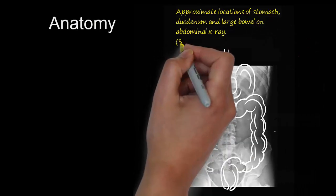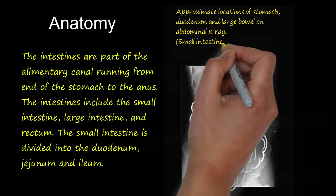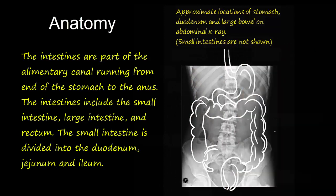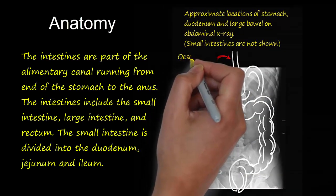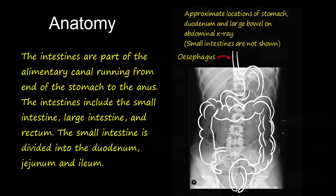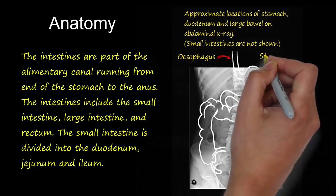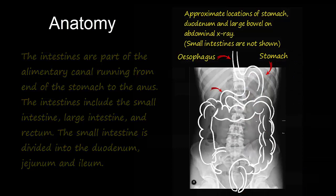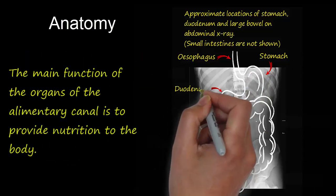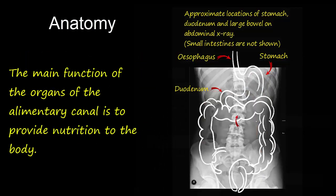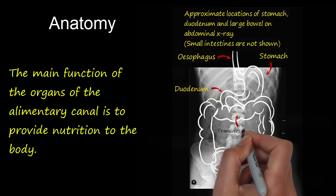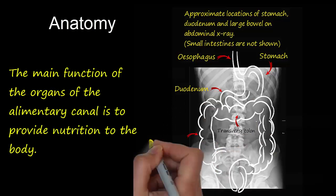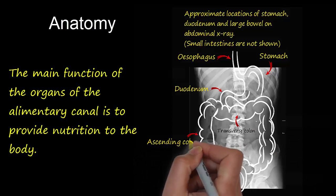Intestines are part of the digestive system and the alimentary canal. The alimentary canal is approximately 7.5 meters in length and is also called the gastrointestinal tract or gut. Its main function is to provide nutrition to the body, with both the mouth and anus open to the external environment. The pharynx, esophagus, stomach, and small and large intestines are all parts of the alimentary canal.